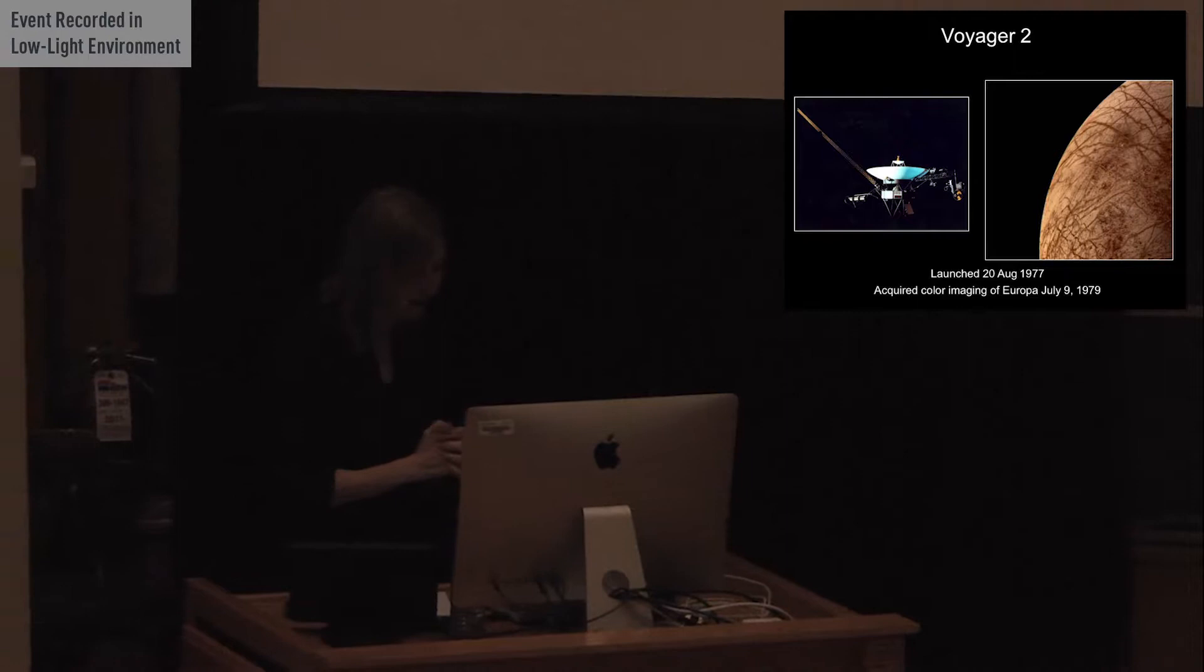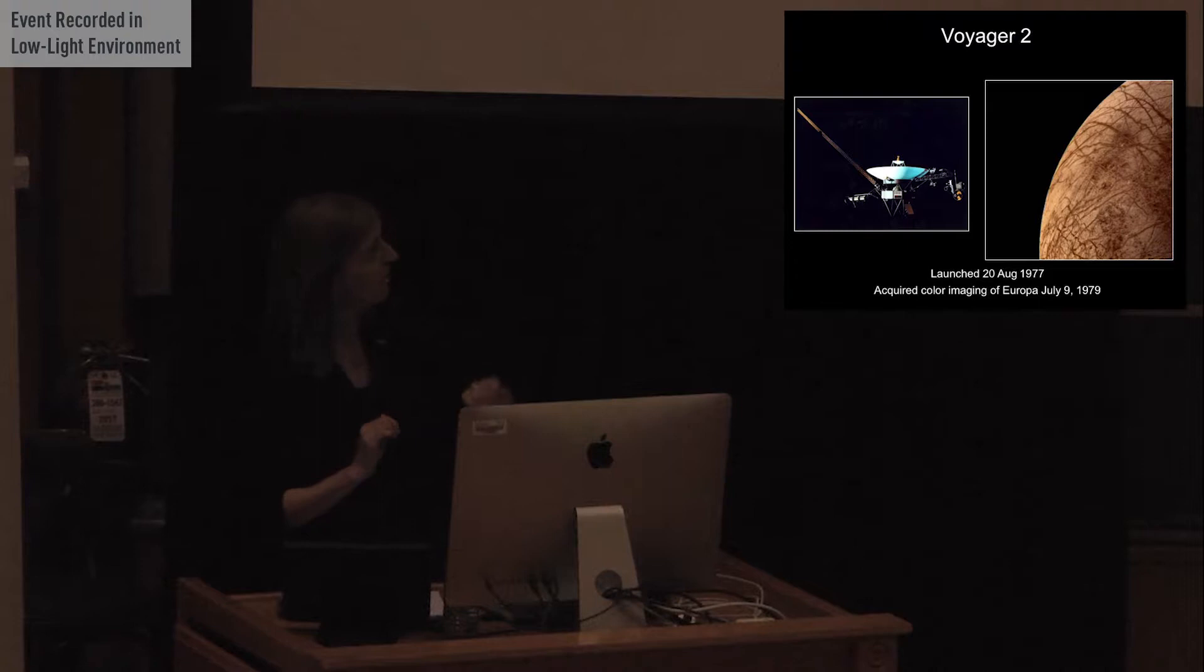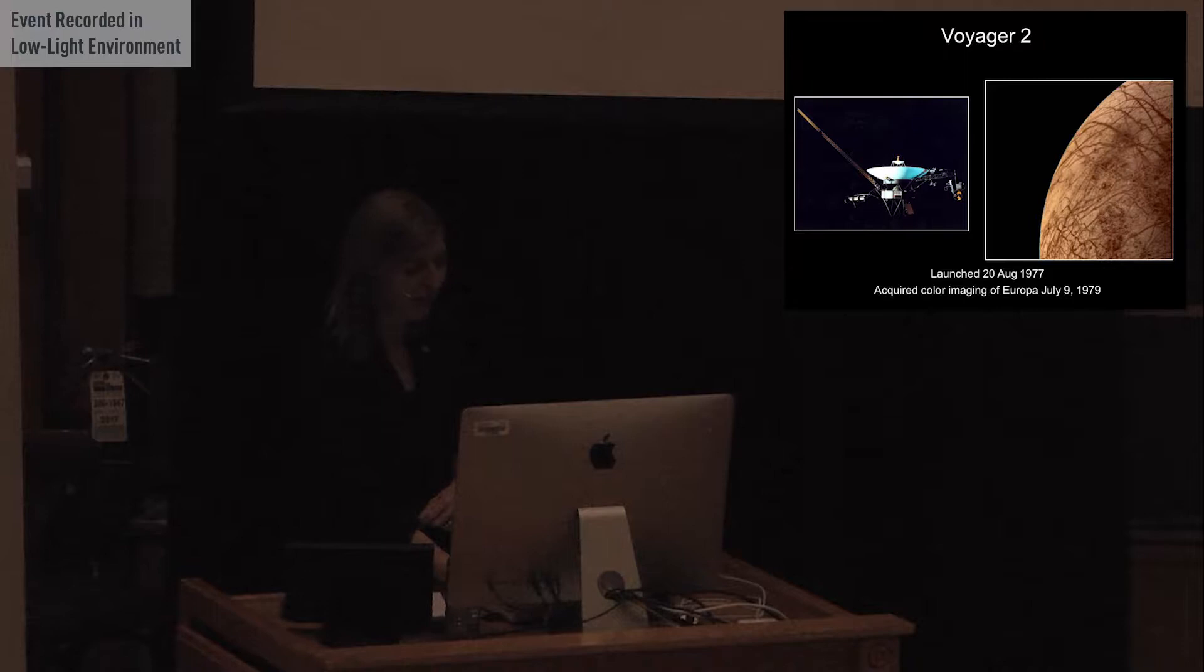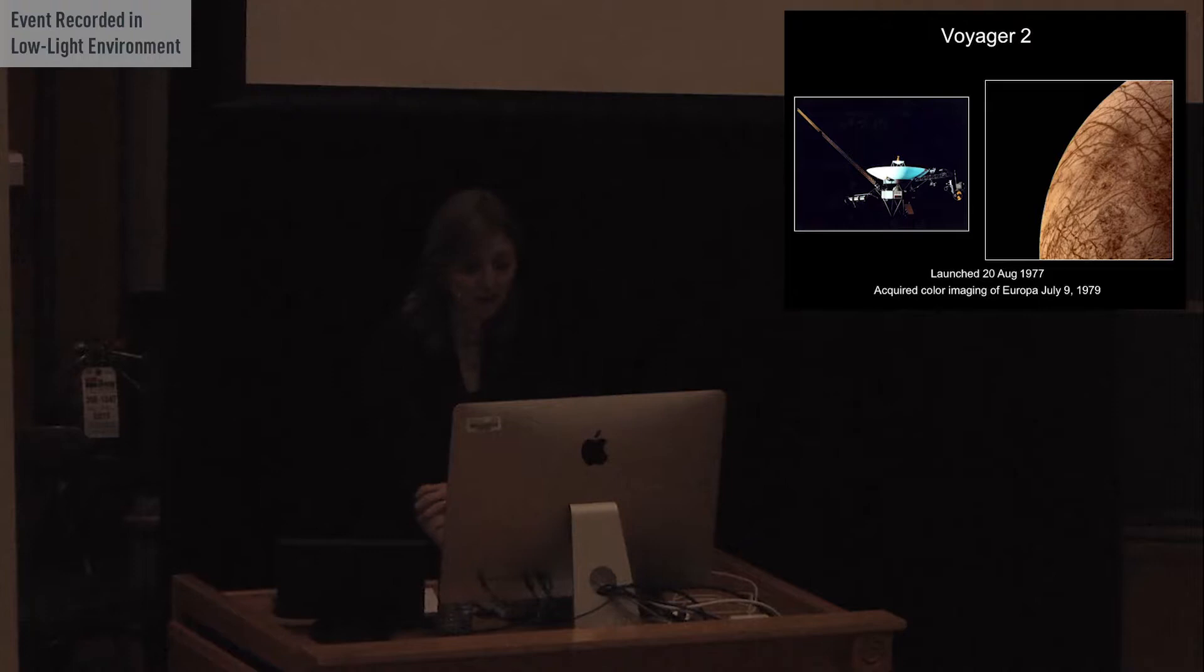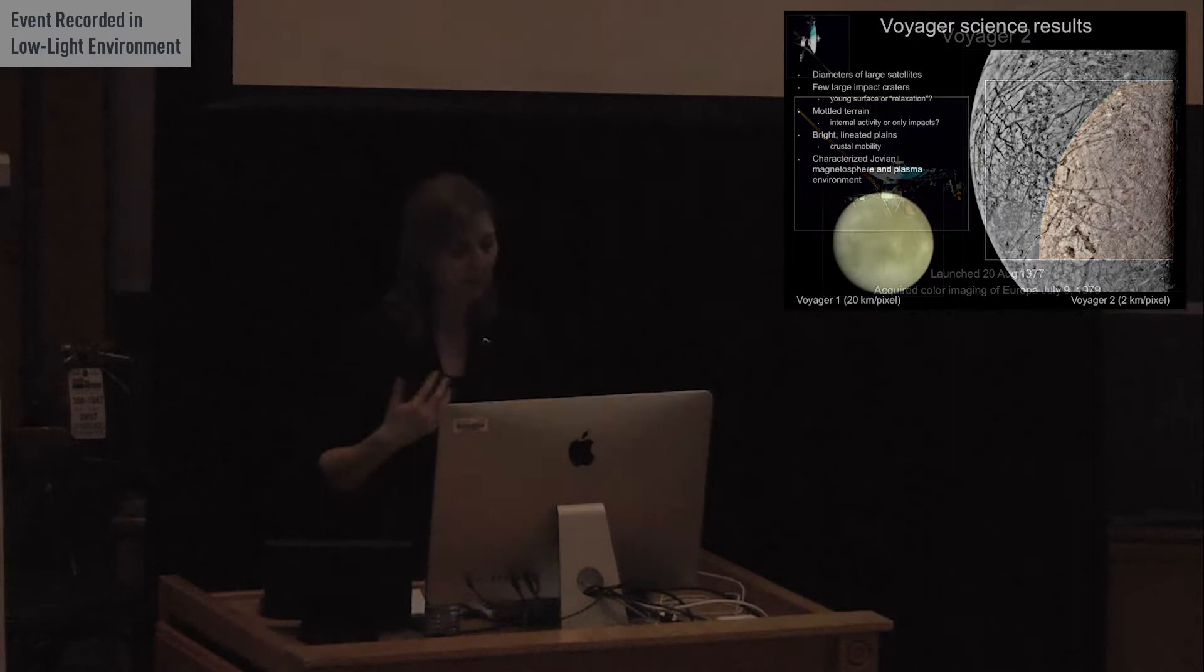Voyager 2 actually made its closest approach slightly earlier. But it launched a couple of weeks later. And it got even higher resolution images of Europa. And here we're starting to see the surface in more detail. There's this strange stuff that they called mottled terrain. They really didn't know what it was. They first thought it might be impact craters. So meteorites and comets sort of hit the surface and disrupted it. But they weren't really sure what it was. But they could also see these linear features everywhere. Very unusual.